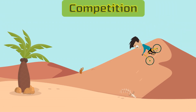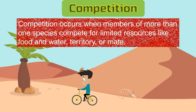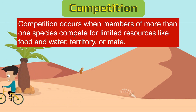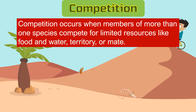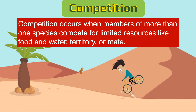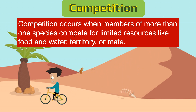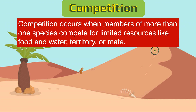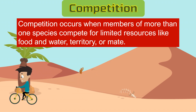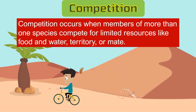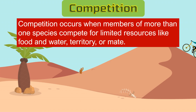Sunod ay ang kompetisyon. Competition occurs when members of more than one species compete for limited resources, like food and water, territory, and mate. Ang kompetisyon ay nangyayari kahit saan, sa tao man, hayop o halaman. Kadalasan, ito ay dahil sa mga pangangailangan na hindi sapat, katulad ng pagkain, lalo na sa mga hayop. Minsan din, ay nag-aagawan ng teritoryo o ng lugar na pagtitirahan.